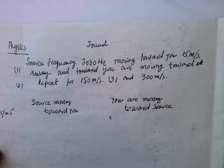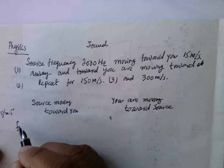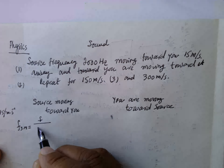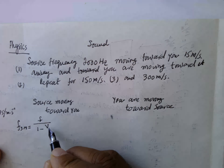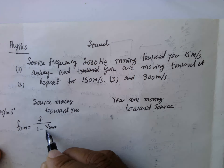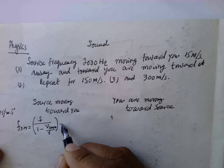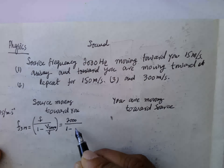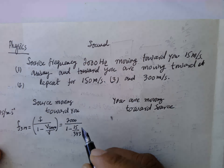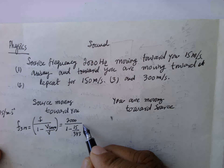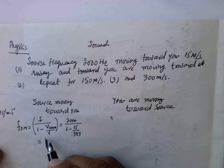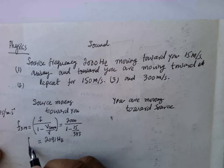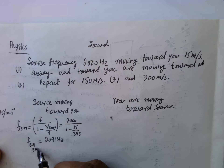Case 1, first part: the source is moving. The observed frequency F equals F₀ divided by (1 minus V_source over V_sound). So this equals 2000 divided by (1 minus 15 over 343 m/s), which gives 2091 Hz. So F for source moving at 15 m/s equals 2091 Hz.